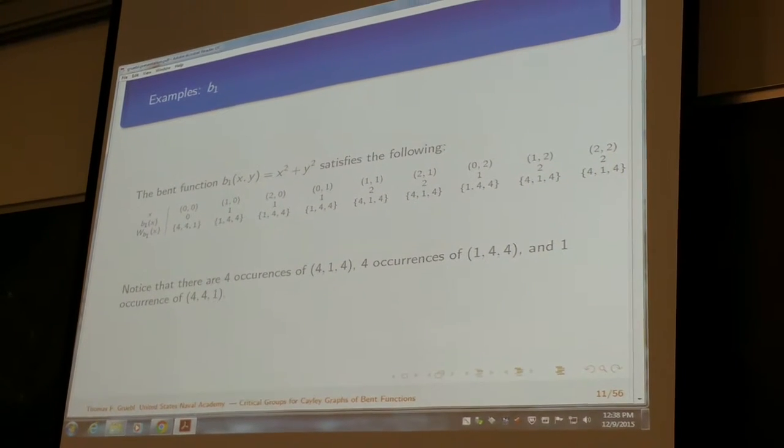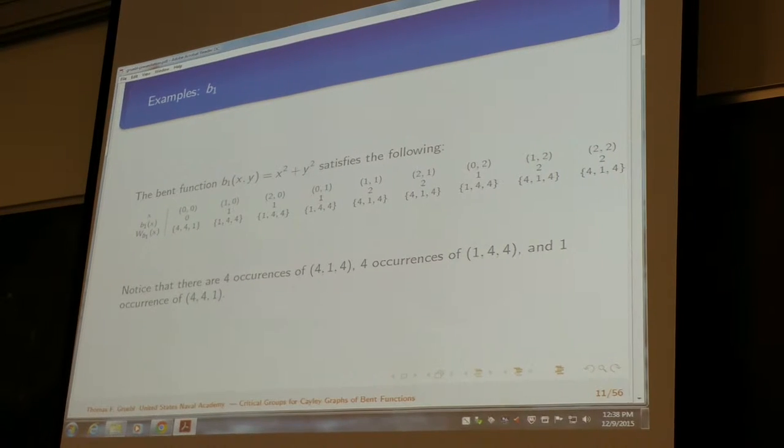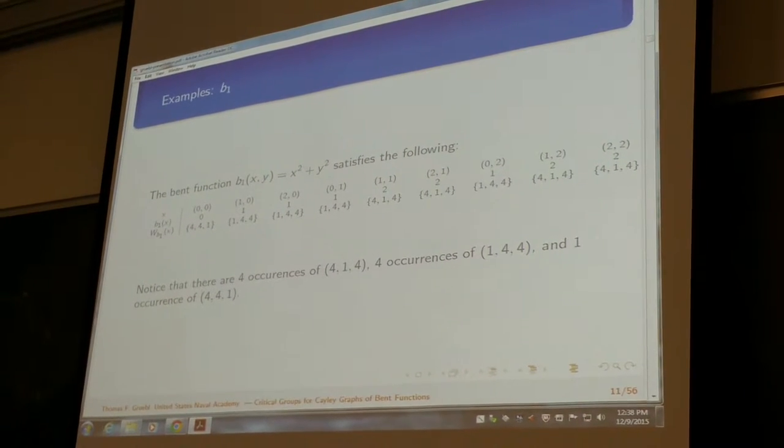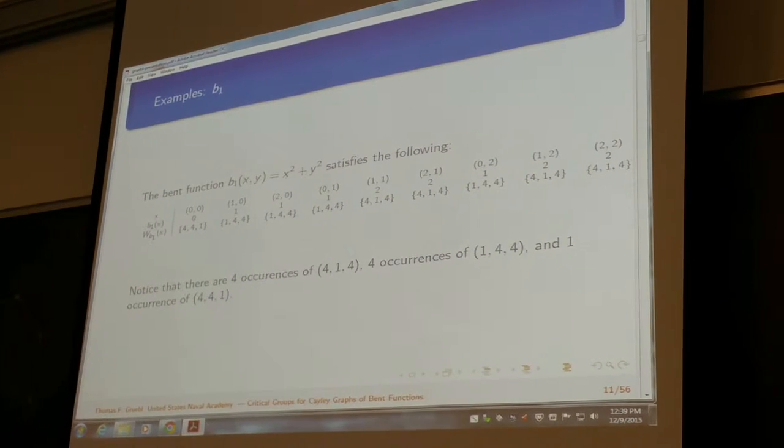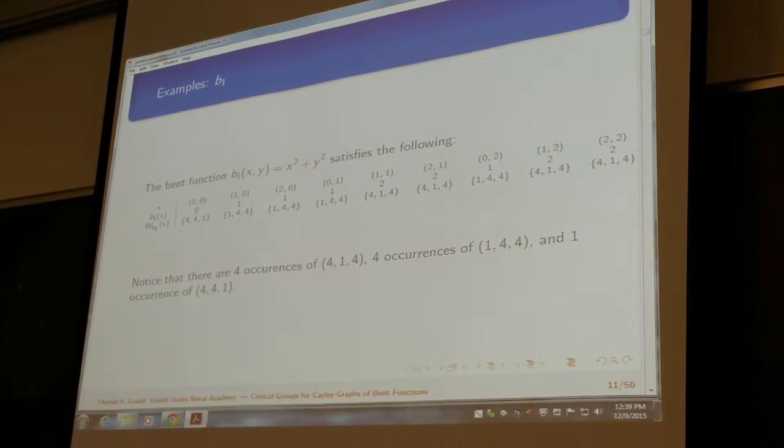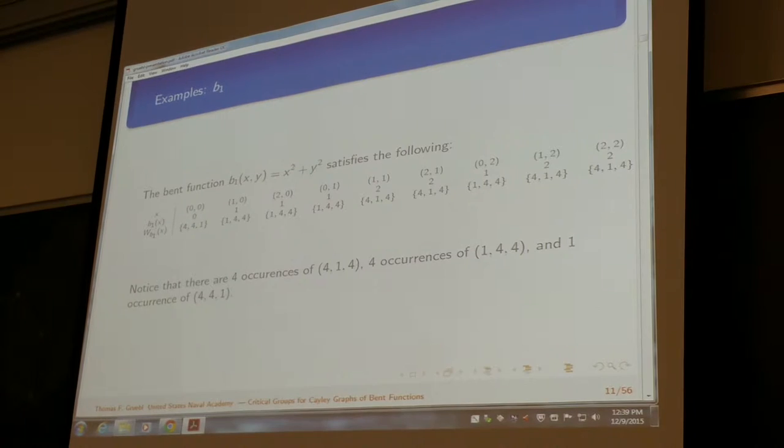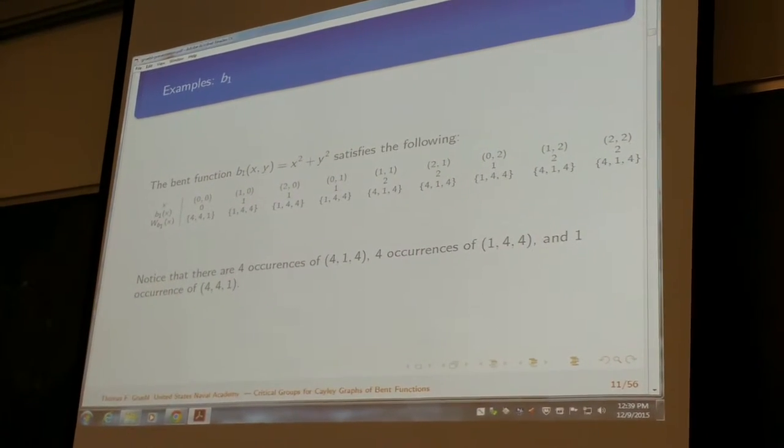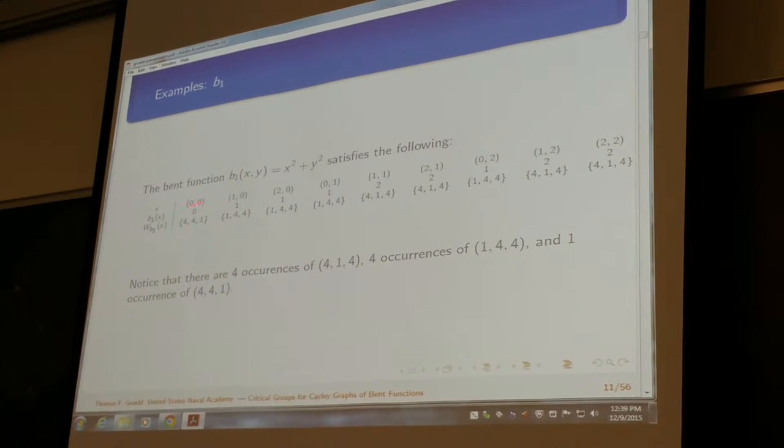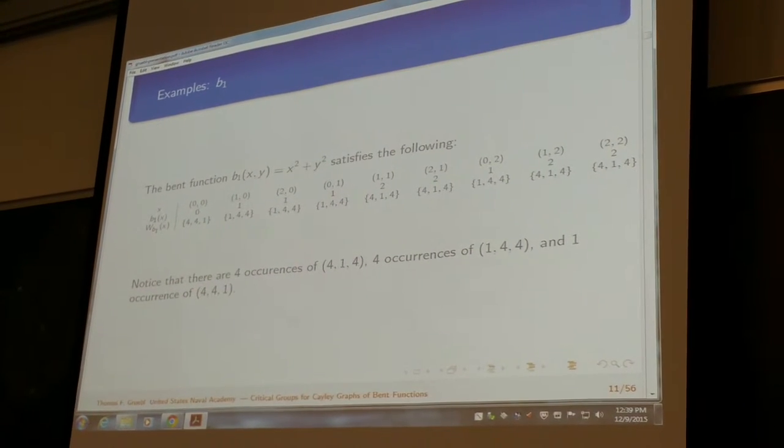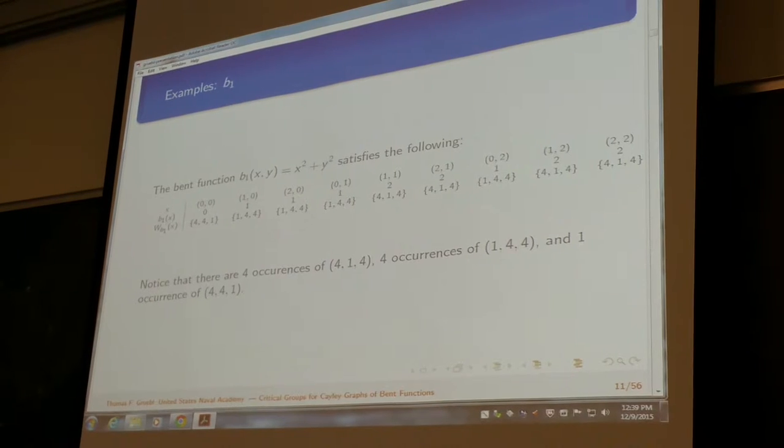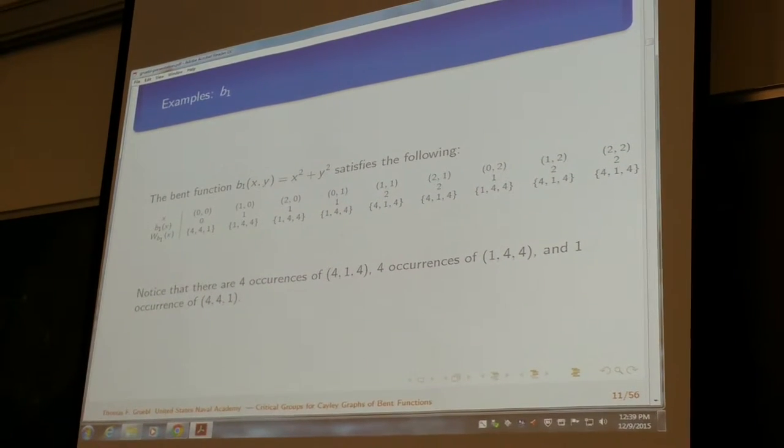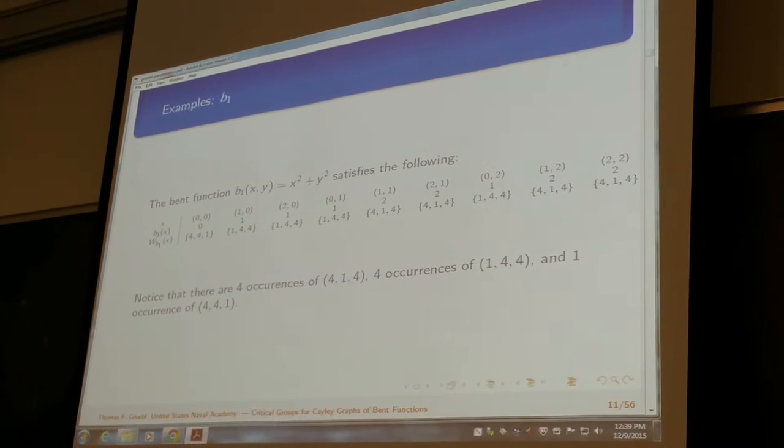So here we're going to note that there are four occurrences of 414, four occurrences of 144, and one occurrence of 441, which as I kind of went through all the examples, it kind of started popping up. There's 441 and there's 441 within the Walsh transform, which is something that I found interesting, and I noticed that it actually ends up happening for all of these examples.